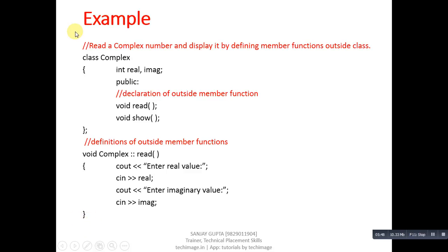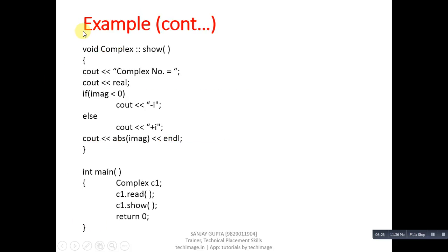Now an example of defining a member function outside the class. The complex class is modified: real and imaginary data members are the same, and in the public section, only the declarations of read and show functions are available. After the class definition, the read function is defined using the scope resolution operator along with the class name, indicating that this read function belongs to the complex class. Similarly, the show function is implemented the same way. In the main function, a complex object is declared and the read and show functions are called.